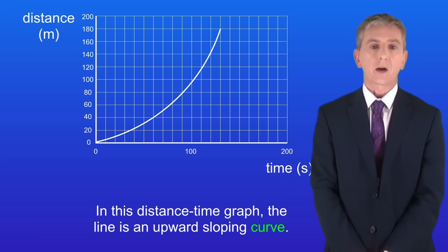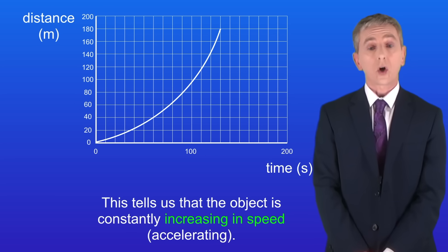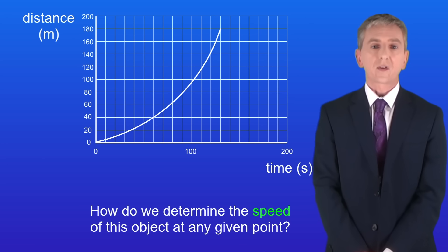Take a look at this distance-time graph. As you can see the line is an upward sloping curve. This tells us that the object is constantly increasing in speed. In other words, it's accelerating. So how do we determine the speed of this object at any given point?